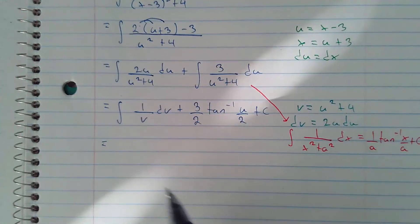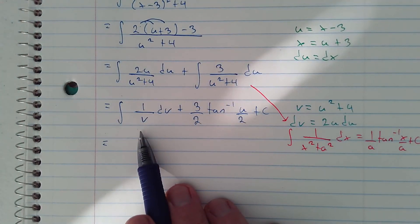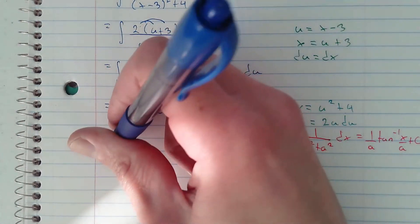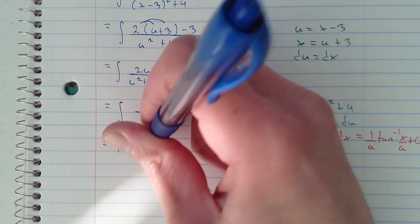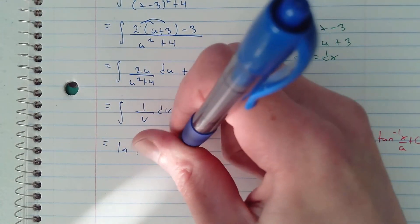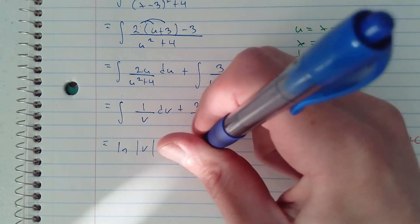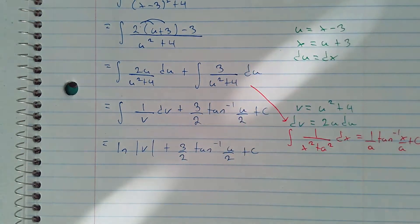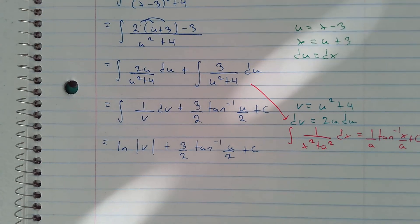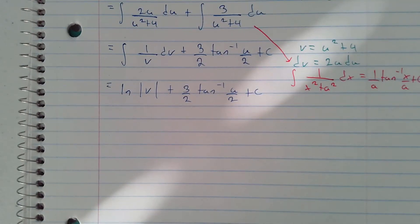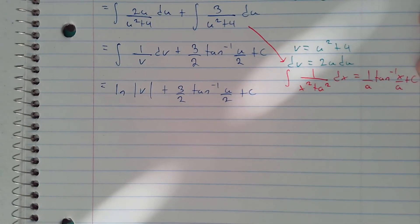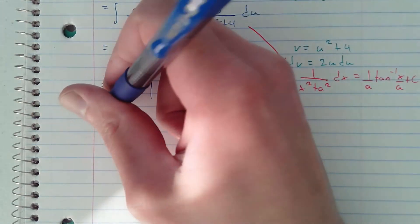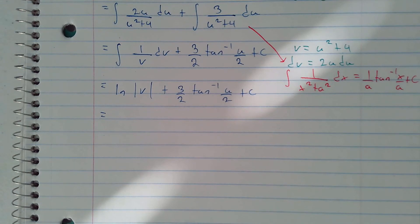The integral of 1 over v is natural log absolute value v. Now we can substitute what we had for v, we had u squared plus 4.